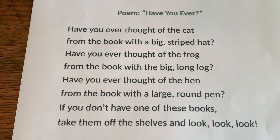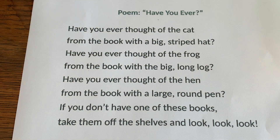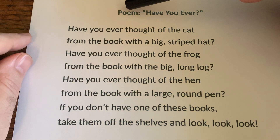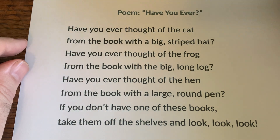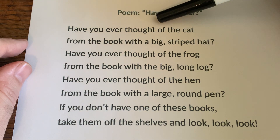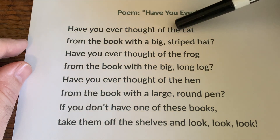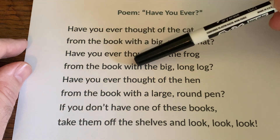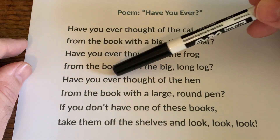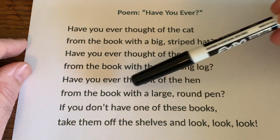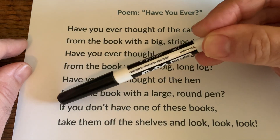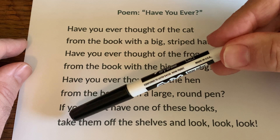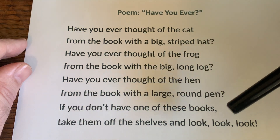Let me zoom in a little bit more and see if I can center that. This poem is also reproduced on a slide for you to go over with your learning buddy. The name of this poem is Have You Ever? Have you ever thought of the cat from the book with a big striped hat? Have you ever thought of the frog from the book with the big long log? Have you ever thought of the hen from the book with a large round pen? If you don't have one of these books, take them off the shelf and look, look, look.